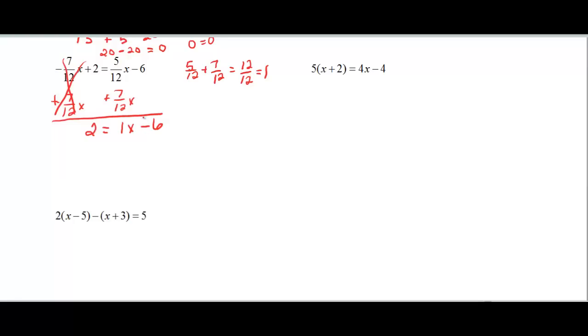Now I have the 6 on the same side with the x, and I don't want it. I need it to go to the other side, so I'm going to add 6 to both sides. 2 plus 6 is 8, and x, so we think that x is equal to 8, so we check it.